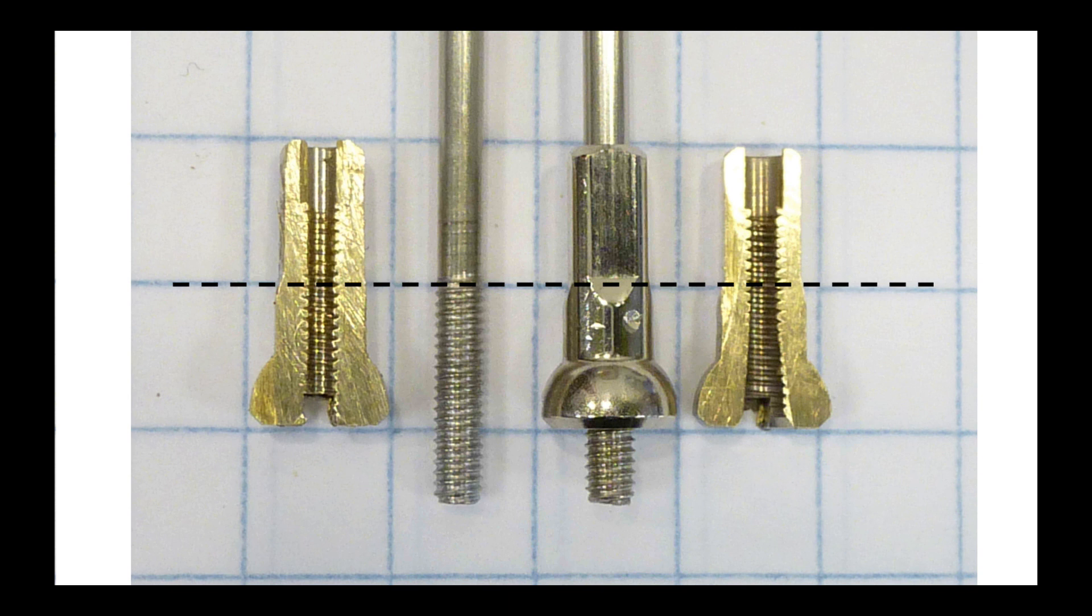If we look at these two nipples here in cross section, the one on the right is a new nipple where the threads are undisturbed, but the one on the left I have screwed on much farther than I normally would and then taken it off. You can see that some of the threads in the nipple have been flattened by the harder material in the spoke.